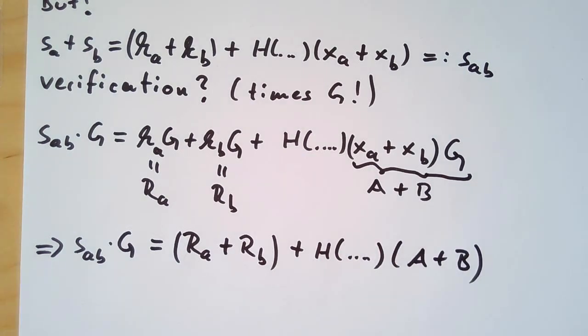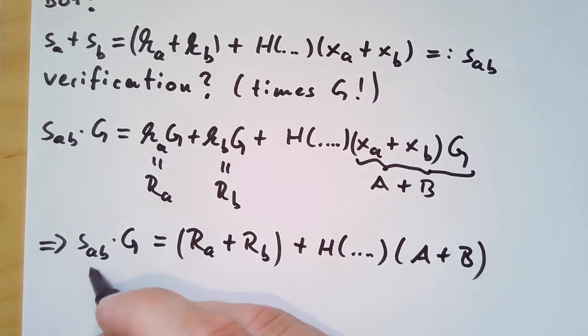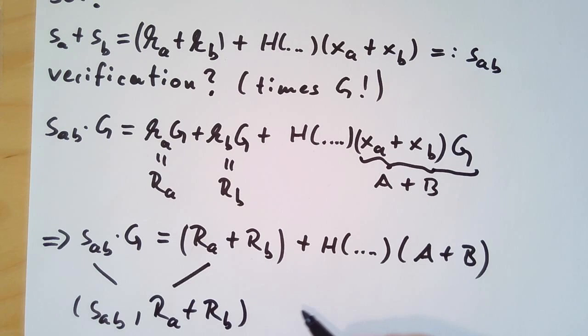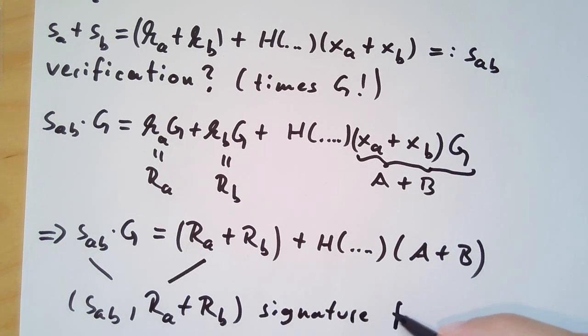And this is really crazy. Because what this leads to is if we look at our verification equation, SA times G now is RA plus RB, which is just the sum of nonces, plus the hash of our message times the sum of the public keys. This verification equation looks exactly like the verification equation of a single partial Schnorr signature as we have seen before. Our signature is the sum of the S values and the sum of the R values. And then of course this is the signature for the Bitcoin address that corresponds to the sum of the public keys of our old Bitcoin addresses, A plus B.